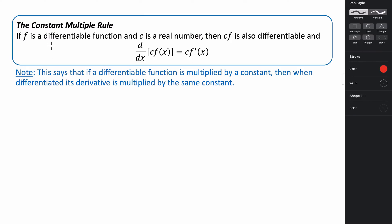Another rule that often comes in handy is the constant multiple rule. It says that if you have a differentiable function and c is a real number, then c times some function is also differentiable, and its derivative with respect to x would be c times the derivative of that function. Basically, you can take the derivative of the function and multiply it by the constant multiple.